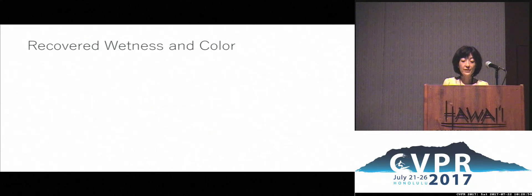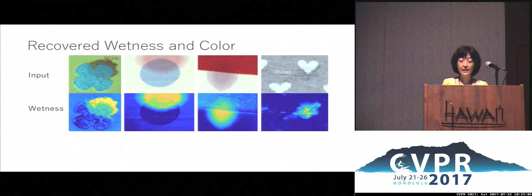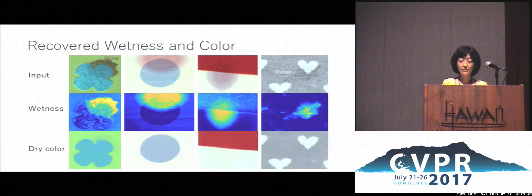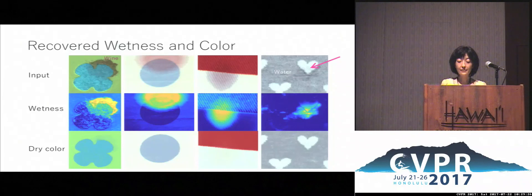Here we show real examples with spilt wine and water. The top row shows input images with wet and dry parts. You can see that the recovered spatial wetness and original dry colours are well estimated. Our algorithm works well even with two colours. For instance, at this bright region, it is even hard for us to see which part is wet, but our method nicely recovers the wet areas across the surface regardless of the underlying colours.